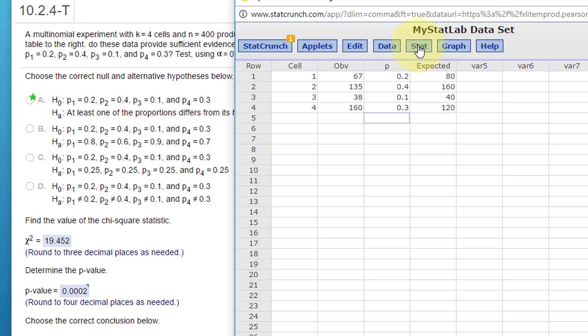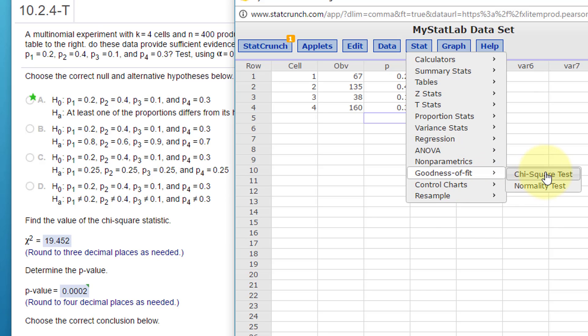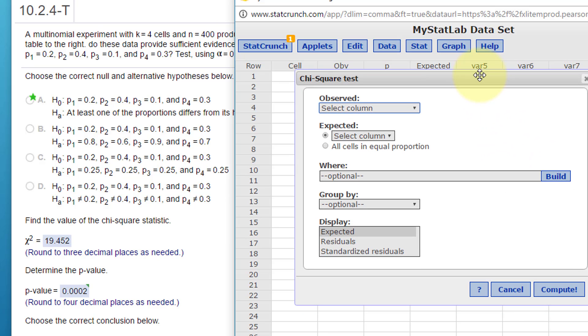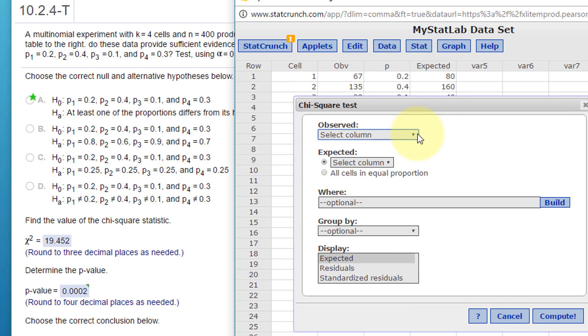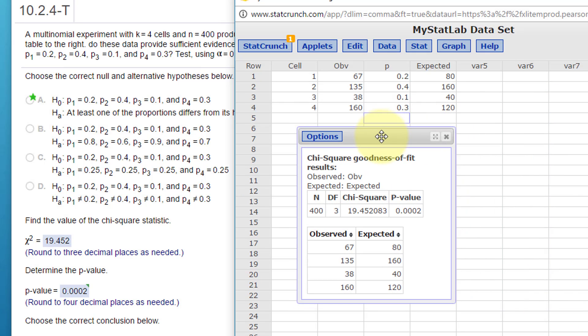Once we get that, we can jump on to Stat, Goodness of Fit, because we're trying to match the null hypothesis proportion distribution to alternative, Chi-square test. We need our observed which is going to be observed, our expected, expected. We're just going to leave those as they are, click on compute and we get an answer here.